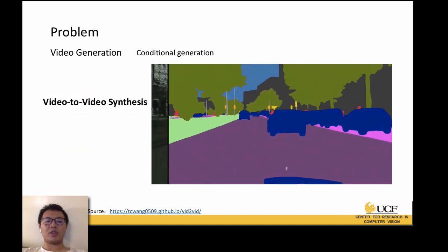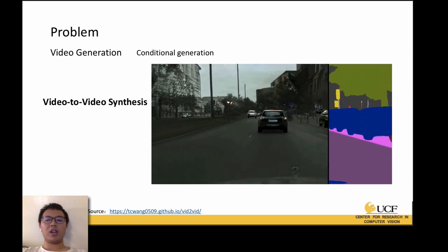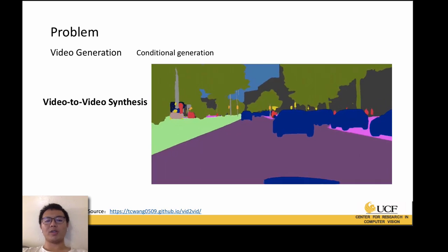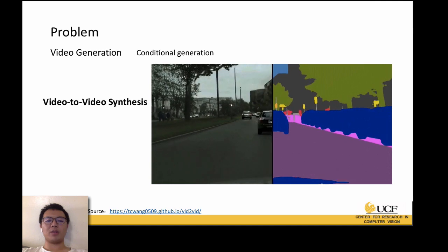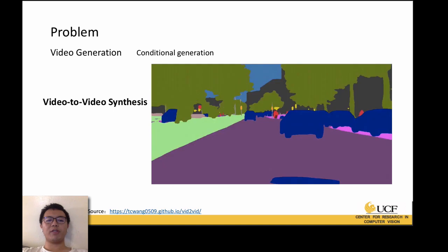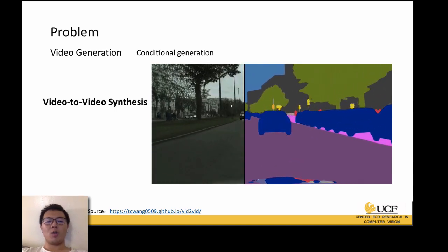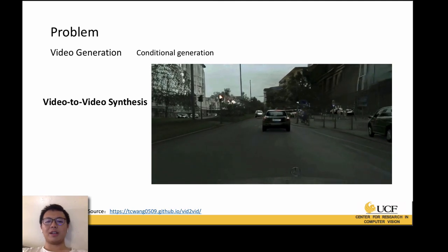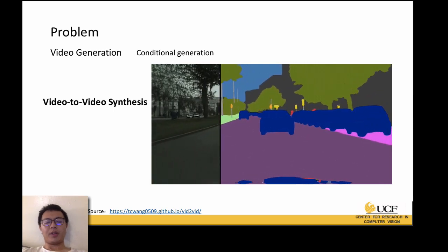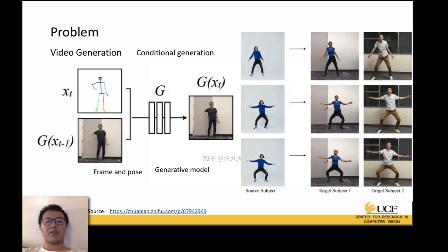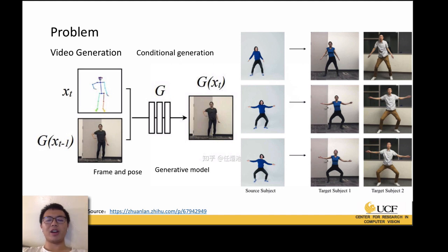Then there is conditional video generation, which takes video, images, labels, or even poses as conditions to generate a new video. A very famous framework is video-to-video synthesis, which uses segmentation and semantic labels to generate a street view. Another conditional video generation example, Everybody Dance Now, can be viewed as a subtask of video-to-video synthesis, since that paper also includes pose as one condition, but focuses specifically on pose information with a different GAN design.